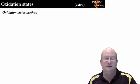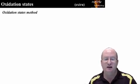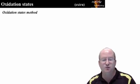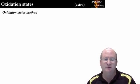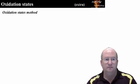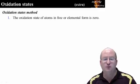This method determines the oxidation state of elements in an entity. These rules are listed in order of precedence. Once you find a rule that applies, stop, apply it, and then move on to the next atom. The first rule is that the oxidation state of atoms in free or elemental form is zero.